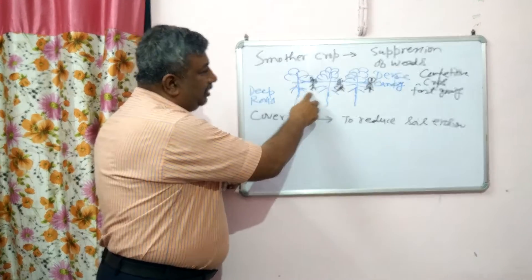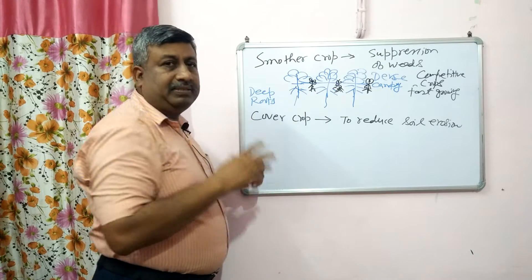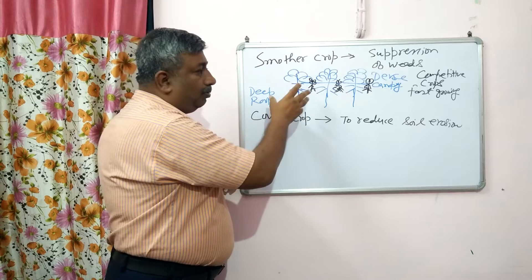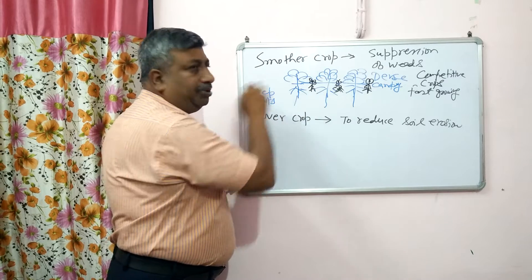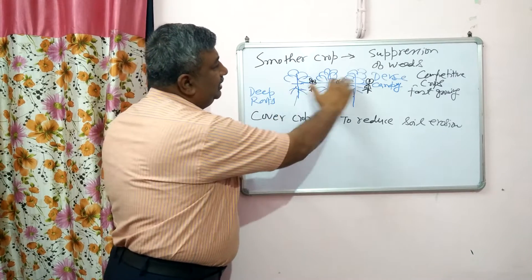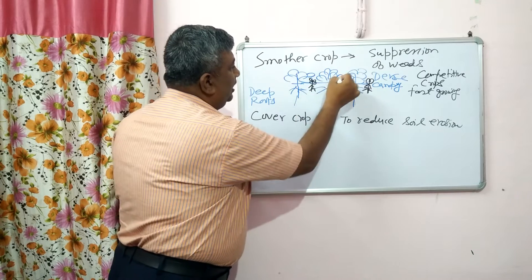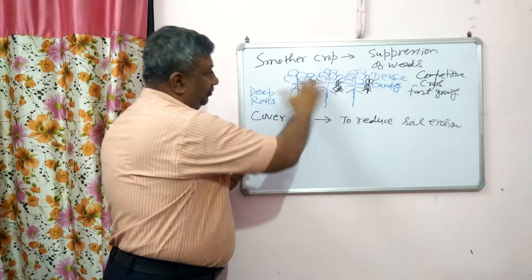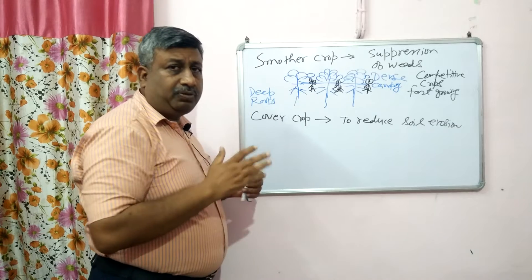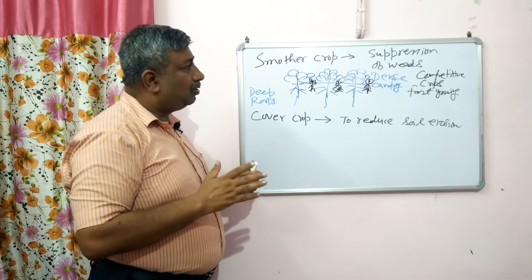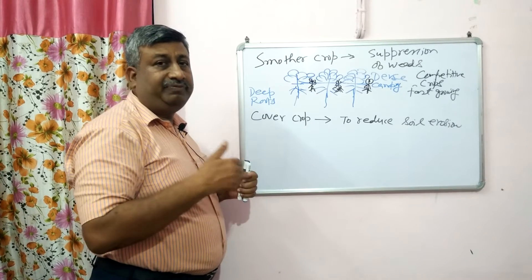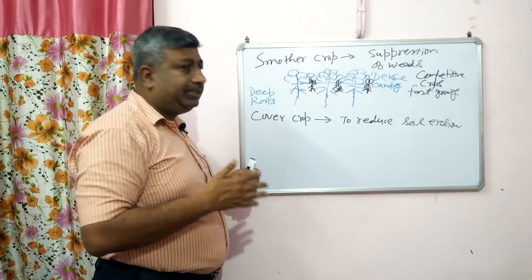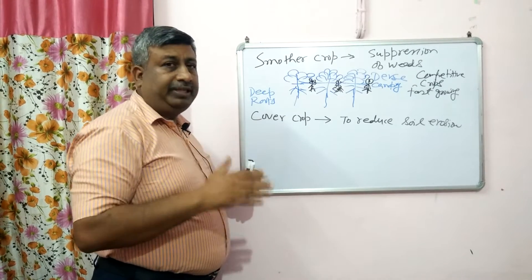In the case of weeds, they compete with the roots, so root deployment is less and shoot deployment is less. Moreover, solar radiation availability is less and the dense canopy creates a shading effect. So solar radiation availability towards weeds is very less, and weed growth — both shoot and root growth — becomes less. That's why smother crops have a suppression effect on weeds; the main objective is to reduce weed growth.